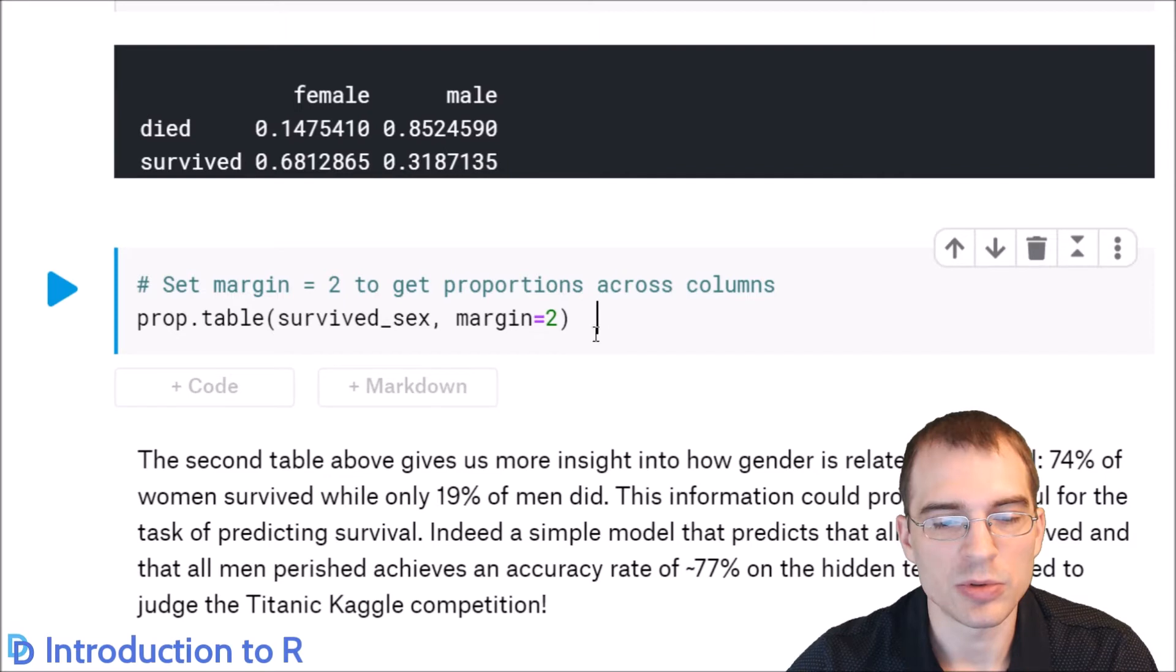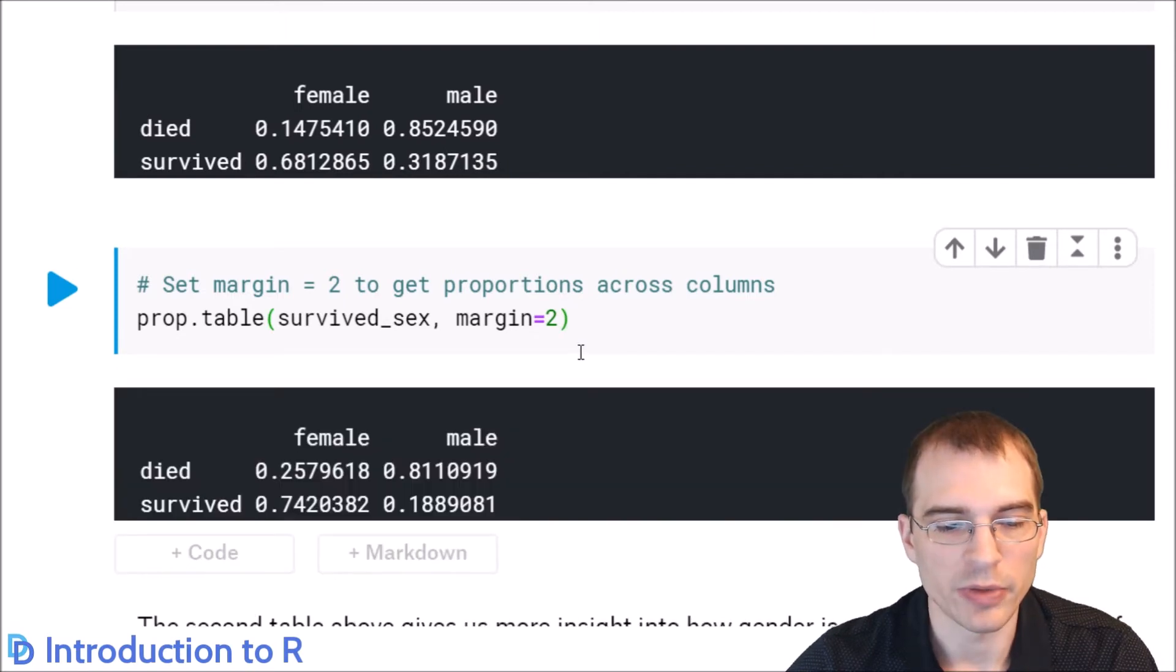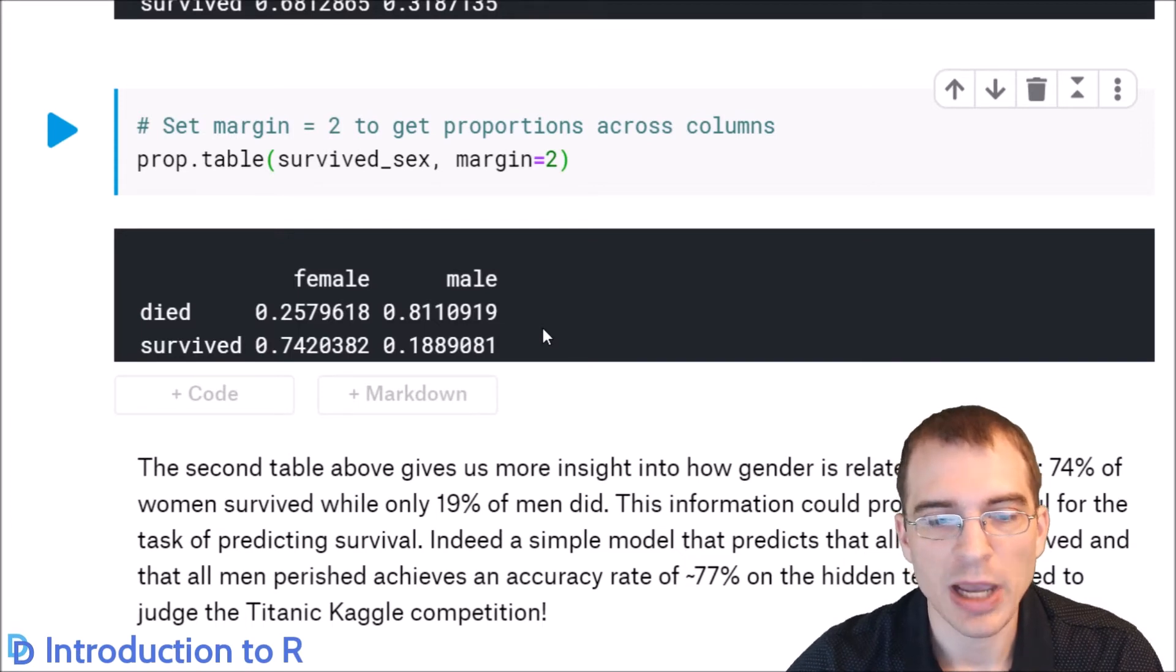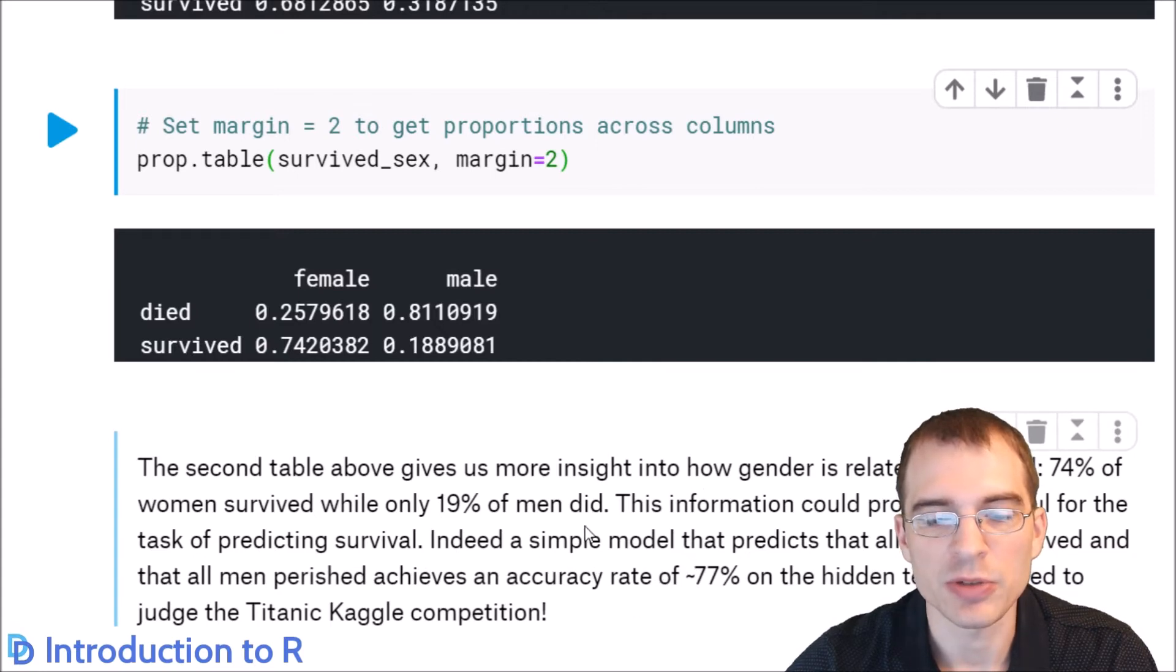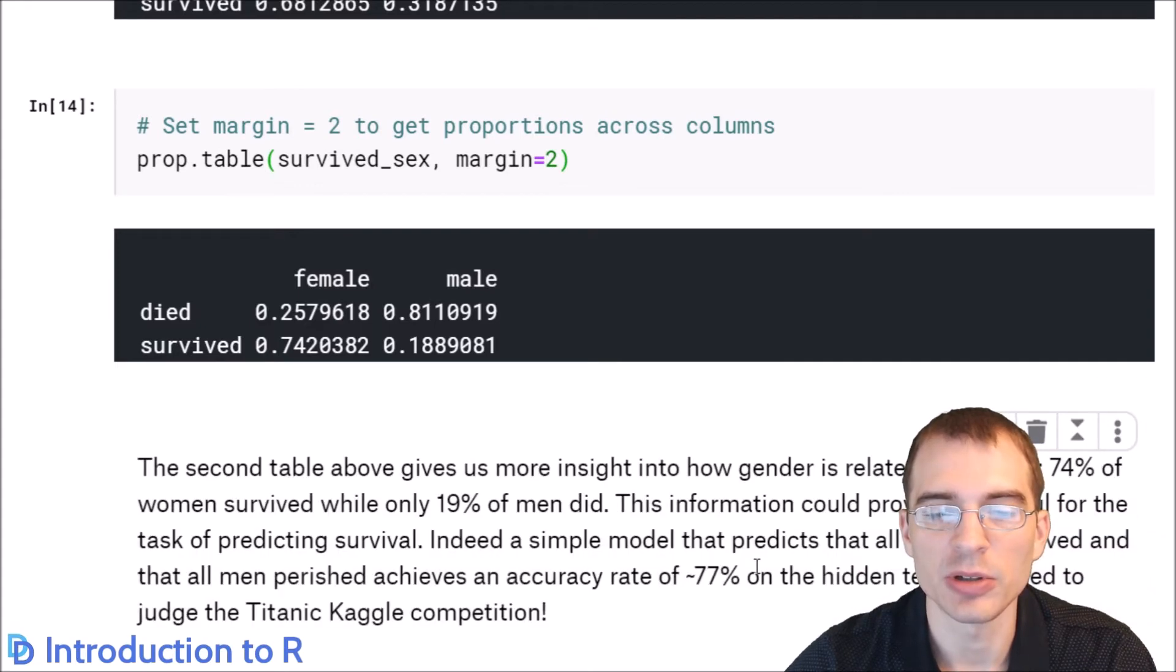Similarly, we can sum across the columns by setting margin equal to 2. I'll run that, and that just shows that 81% of males did not survive and about 18% or 19% did and 25% of females passed away and around 75% survived. So the output of this table suggests that passenger sex is likely an important variable for this predictive task since the differences in these percentages are quite large. In fact, if you were to submit predictions to this competition where all the males passed away and all the females survived, you would get an accuracy of about 77%, which is quite good for only using a single variable as a predictor.